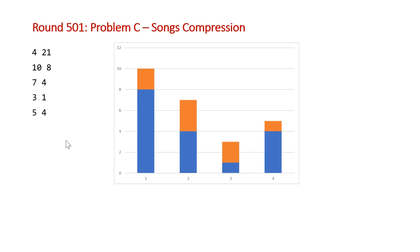So if we visualize this, it'll look as follows. Each of these represent the two different sizes for each of our songs. So blue plus orange is equal to the total size and then blue is the compressed size.